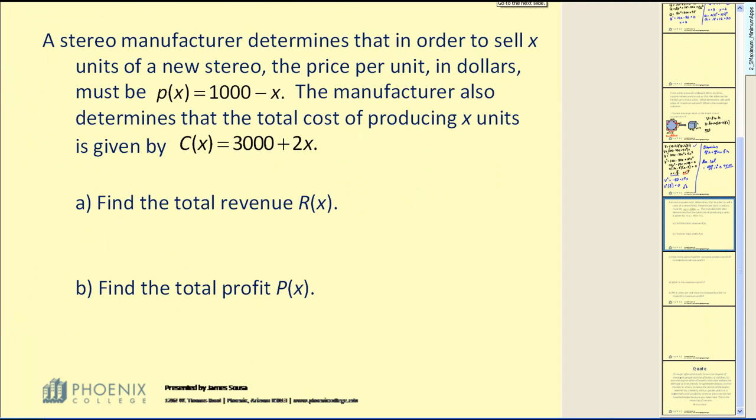Let's take a look at one more example. A stereo manufacturer determines that in order to sell x units of a new stereo, the price per unit in dollars is given by p(x) equals 1000 minus x. The manufacturer also determines the total cost of producing x units is given by this cost function.